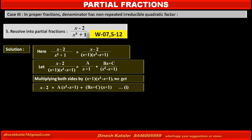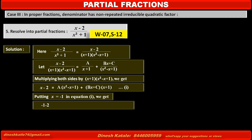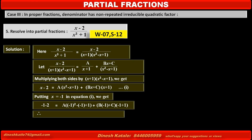To find the value of A, we cancel the terms involving B and C by making the factor (x plus 1) equal to zero. Putting x equal to minus 1 in equation 1: the left-hand side becomes minus 1 minus 2, and the right-hand side first term becomes A into (minus 1 squared minus minus 1 plus 1), and the second term becomes (B times minus 1 plus C) times (minus 1 plus 1). Solving, we get A equal to minus 1.